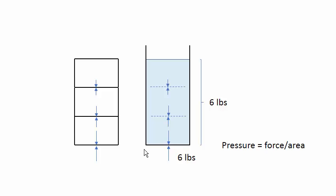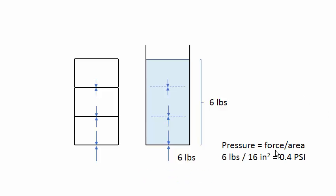That's the total force on the bottom of the container. What is pressure? Pressure is force divided by area. Let's say that the bottom of this container measures four by four inches, or 16 square inches. In that case, the pressure is six pounds divided by 16 square inches, that's about 0.4 pounds per square inch, rounding to the nearest tenth.